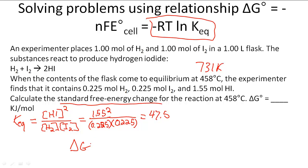Standard free energy change is going to be negative 8.314 joules per mole Kelvin—that's the R constant we're going to use. Temperature is 731 Kelvin times the natural log of Keq, which we found is 47.5.